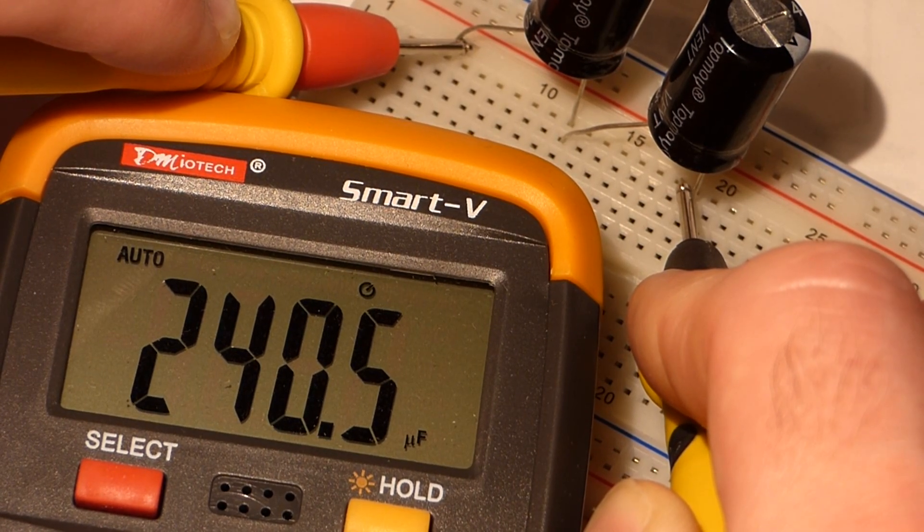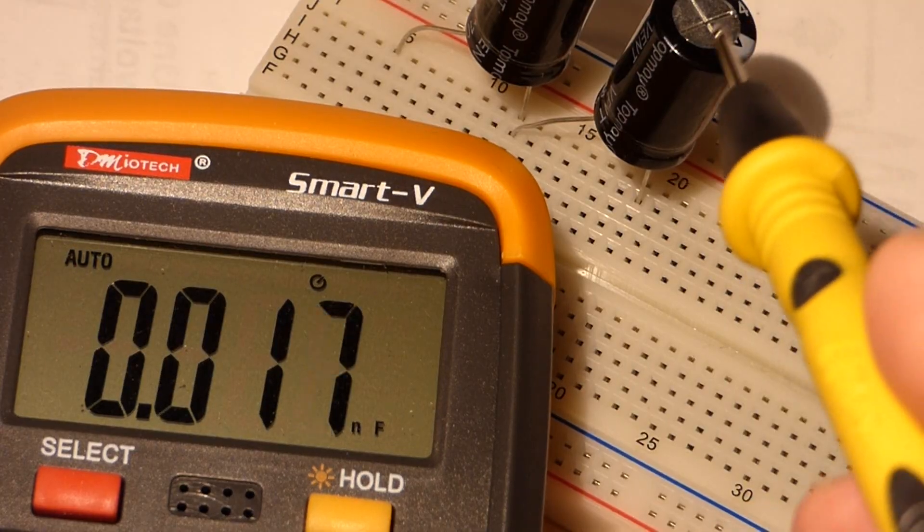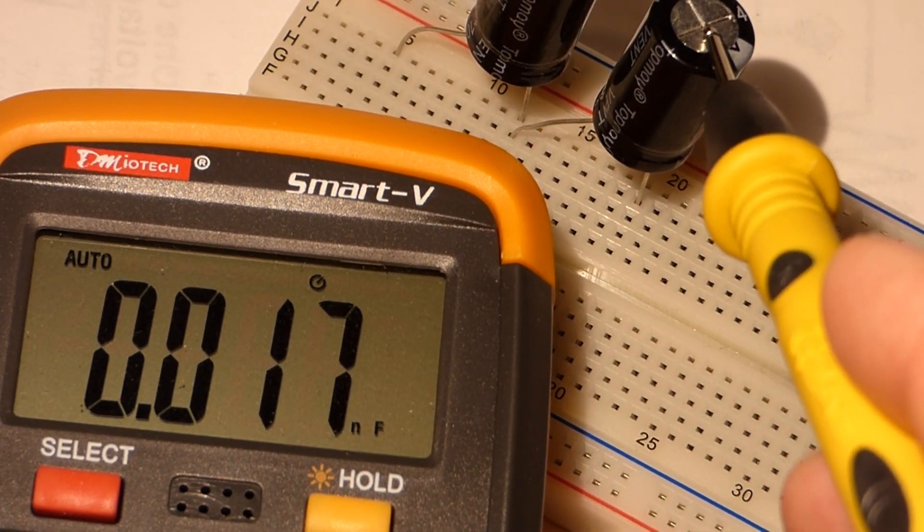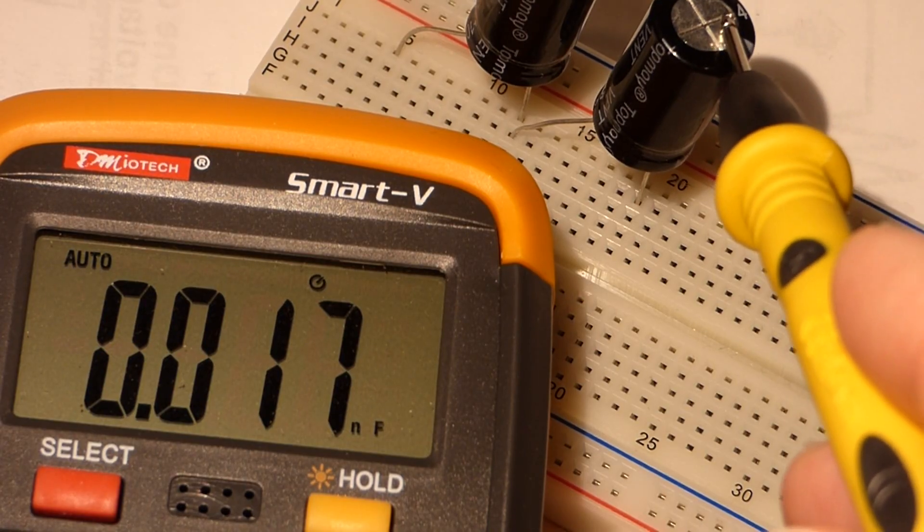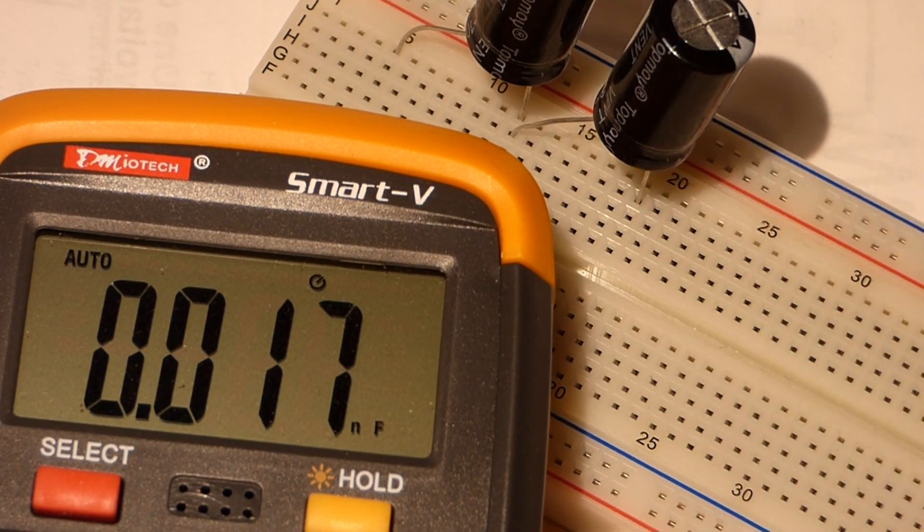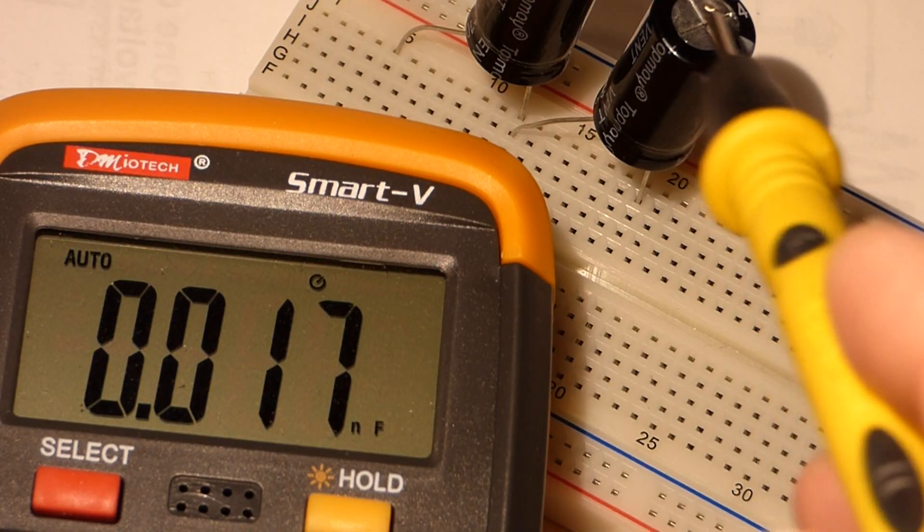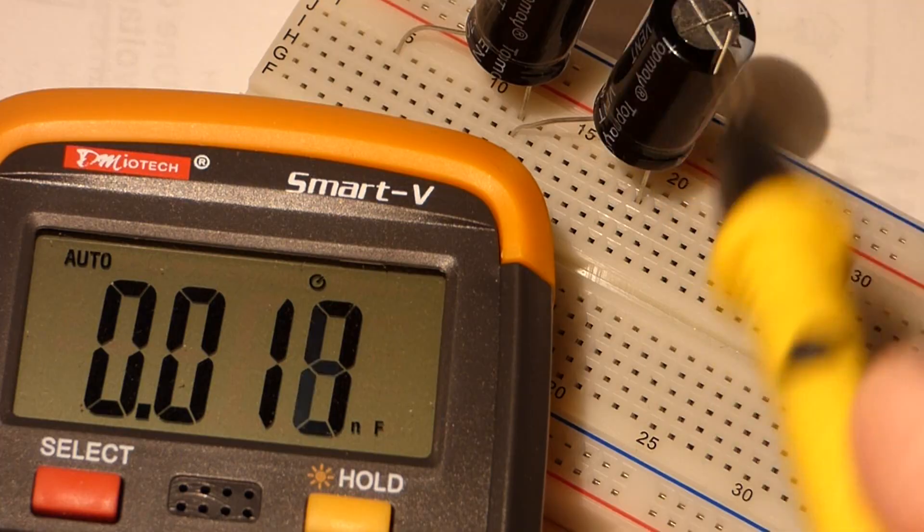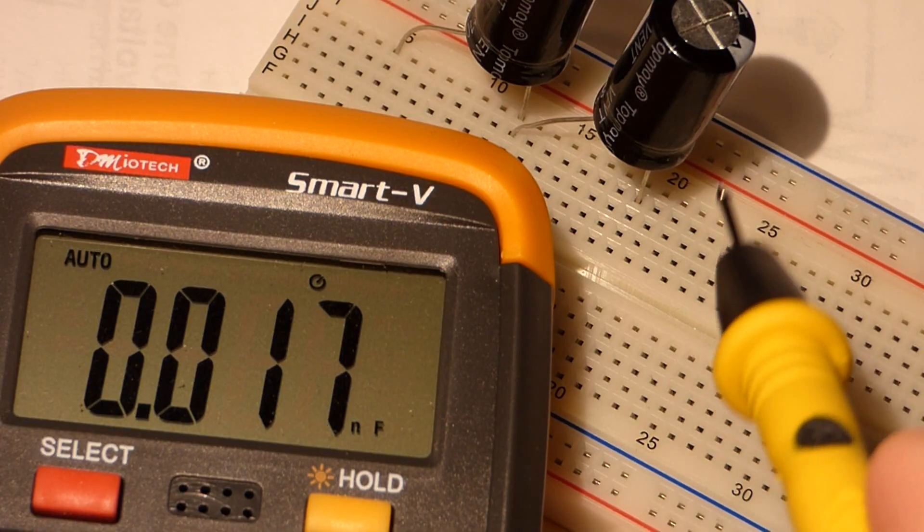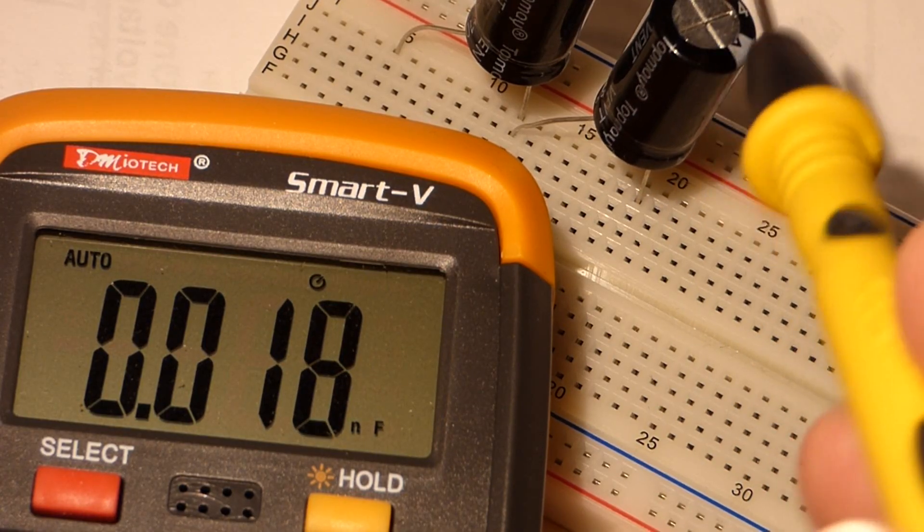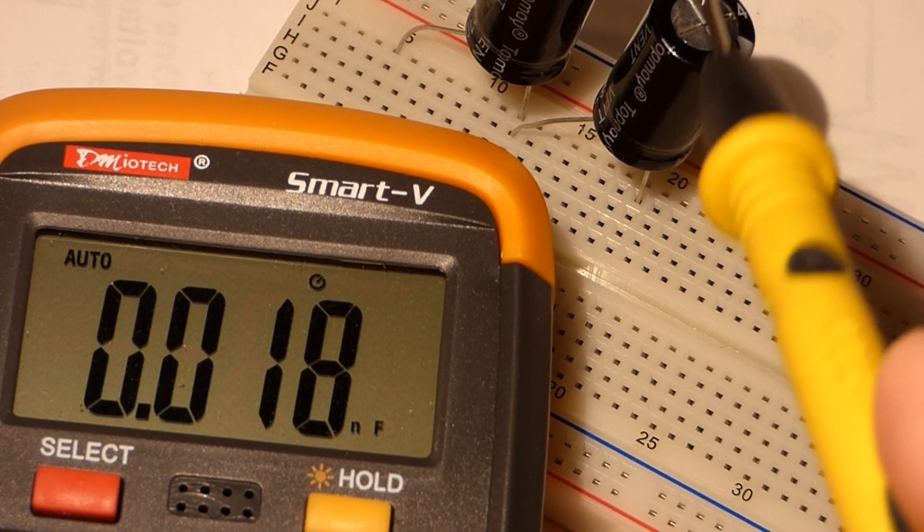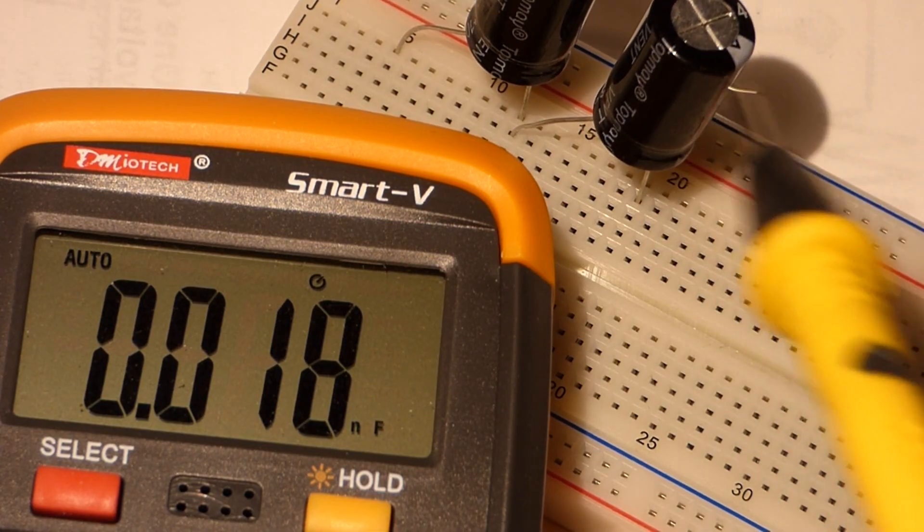But now the capacitance went down with the two of them. But these are both rated for 50 volts as I showed you earlier. And now you can apply 100 volts to these. So you can add twice the voltage. So even though the capacitance went down in half compared to one of these, now you can double the voltage. And so it evens out a bit if you can apply that much voltage.